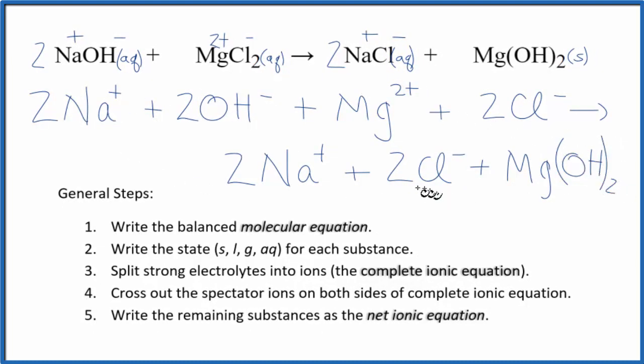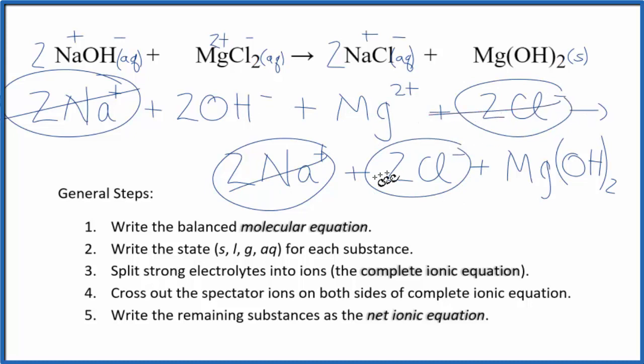So this is our complete ionic equation. Now we can cross out spectator ions on both sides of the complete ionic equation. So I'm looking for things that are the same in the reactants and the products. I have two sodium ions in the reactants, two in the products, let's just cross them out. Two chloride ions, two chloride ions, cross them out.